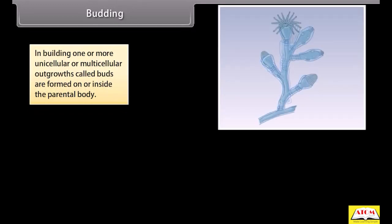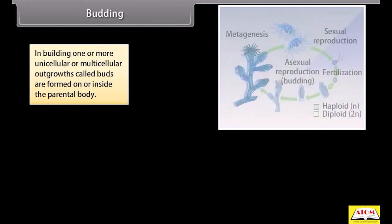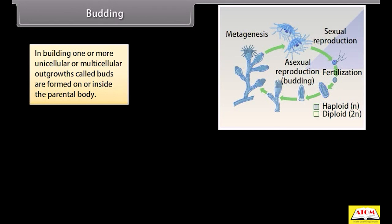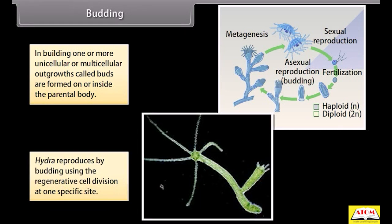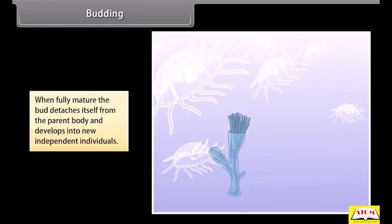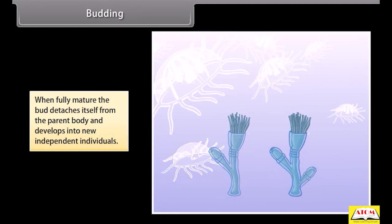In budding, one or more unicellular or multicellular outgrowths called buds are formed on or inside the parental body. Hydra reproduces by budding using regenerative cell division at one specific site. When fully mature, the bud detaches itself from the parent body and develops into a new independent individual.